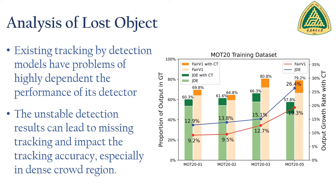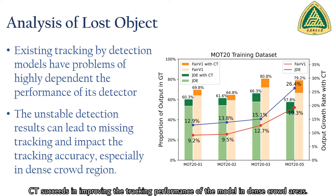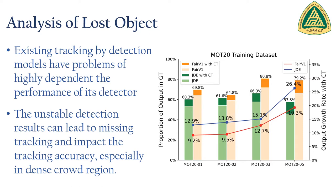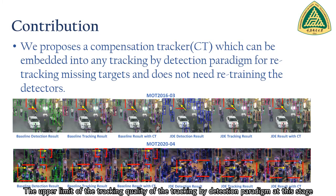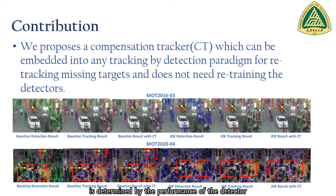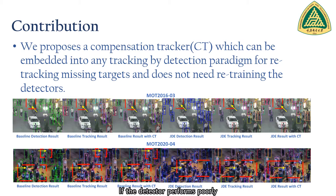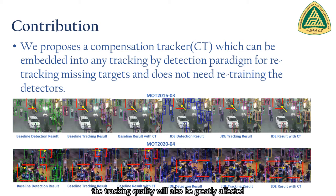To sum up, CT succeeds in improving the tracking performance of the model in dense crowd areas. The upper limit of the tracking quality under the tracking-by-detection paradigm at this stage is determined by the performance of the detector. If the detector performs poorly, the tracking quality will also be greatly affected.